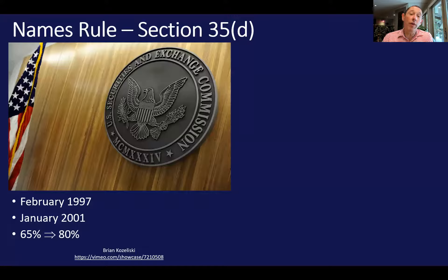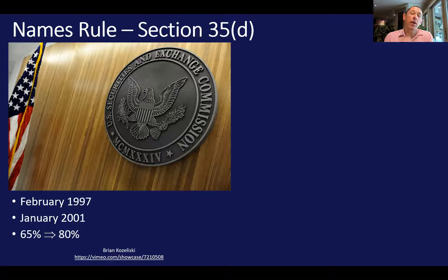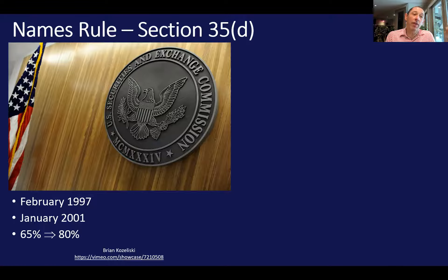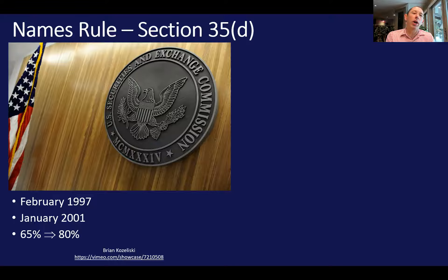To refresh your memory, the current rendition of the Names Rule is part of the Investment Company Act of 1940, specifically Section 35(d). They started changing what they were going to do here in February of 1997 and fully implemented that in January of 2001. One of the changes was going from a 65% rule to an 80% rule. What that means is if you put an asset class, industry, region, or specific company in the fund's name, that needs to match what's in the fund — so if you say you are a stock fund, then 80% of the assets under management must be in stock.